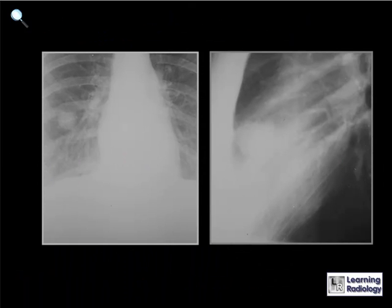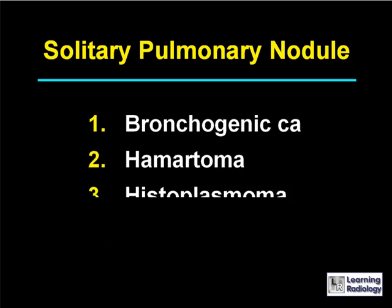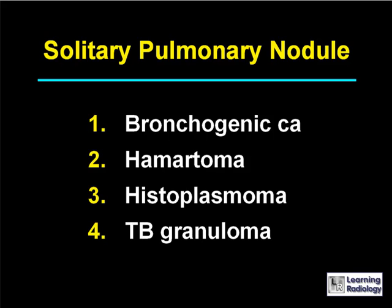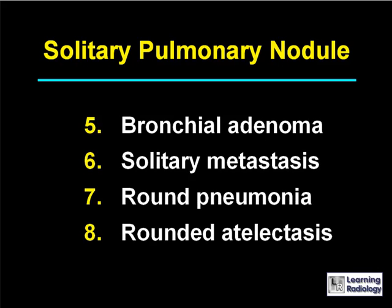Here's the next differential. The differential is a solitary pulmonary nodule. There are eight causes in the list. The eight causes of a solitary pulmonary nodule would include bronchogenic carcinoma, hamartoma, histoplasmoma, tuberculosis granuloma, bronchial adenoma, solitary metastasis, round pneumonia, and rounded atelectasis.